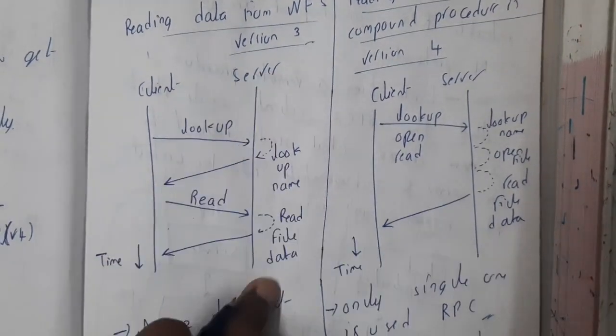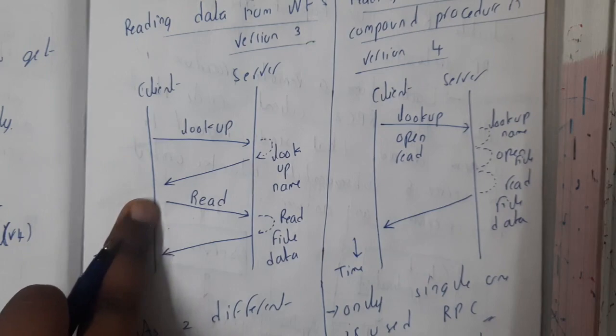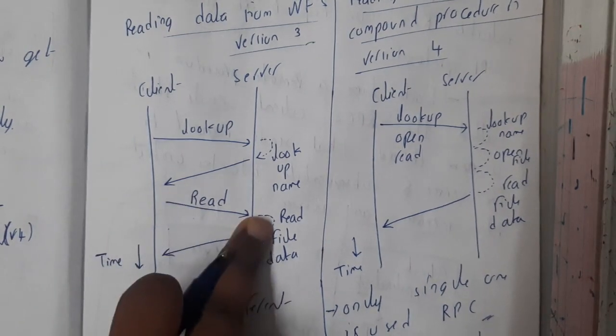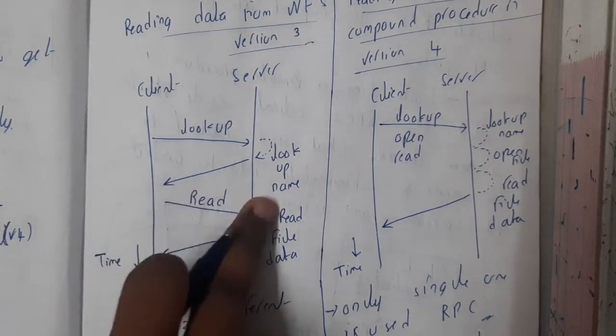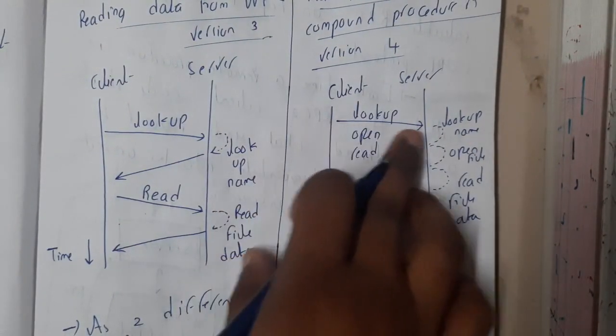If you observe the client and the server, he looked up for data, he got the data and he will be returning back. He'll be opening the file and he'll be reading the file and he'll do all the operations. So basically it is step by step.